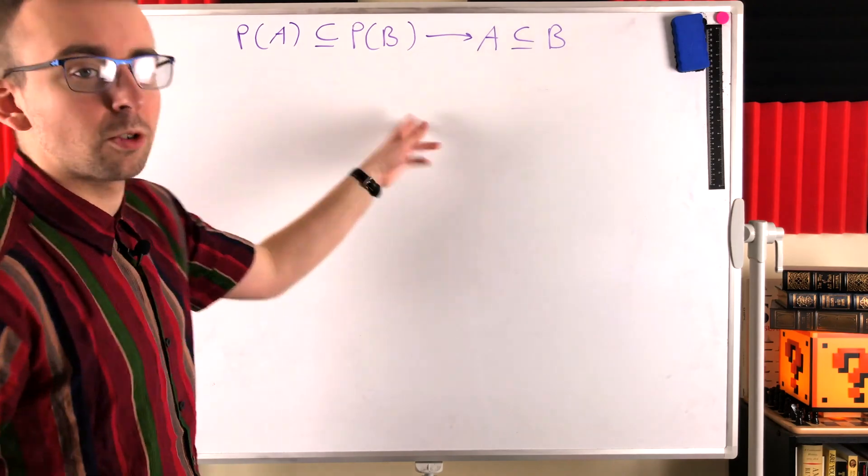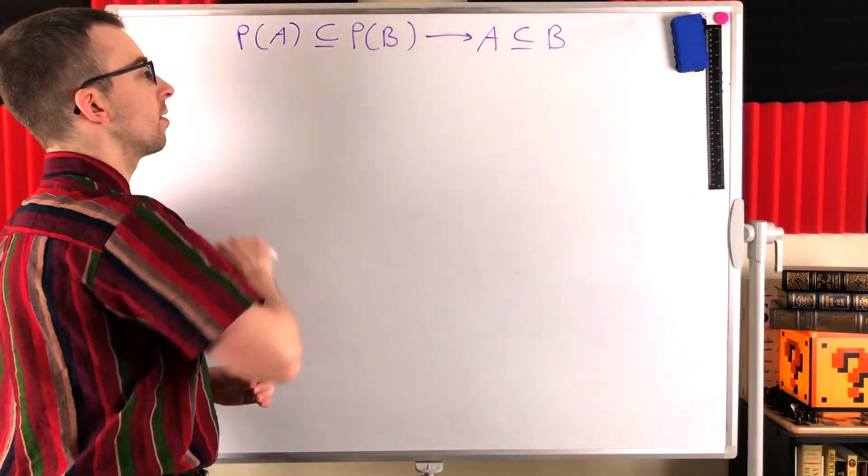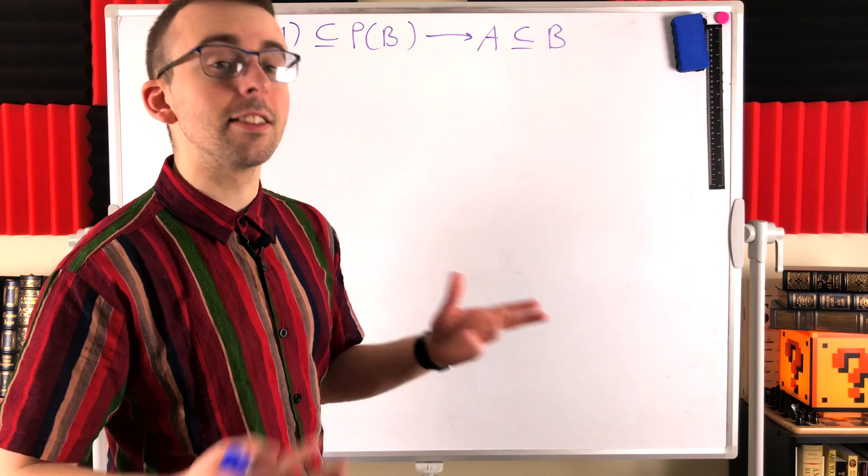Quickly, why is this true? Just intuitively should make sense. What does the power set of A contain? It contains the subsets of A. The power set of B contains the subsets of B.